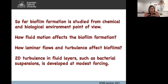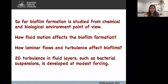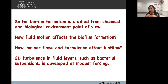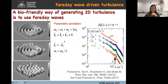In bacterial suspensions such as thin fluid layers, it's relatively easy to generate two-dimensional turbulence. The main difference between 2D and 3D turbulence is the mechanism of energy dissipation. For 3D turbulence, energy is dissipated at the viscous scale, while for two-dimensional turbulence there's the inverse energy cascade, where energy is transferred from small to large scales and dissipated there. This makes two-dimensional turbulence develop at quite modest forcing. One bio-friendly way to generate two-dimensional turbulence in the laboratory is using Faraday waves.